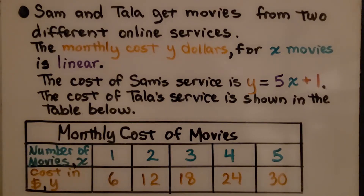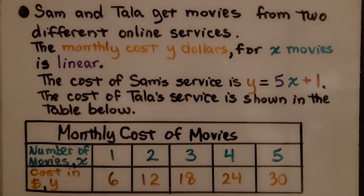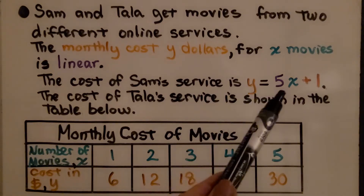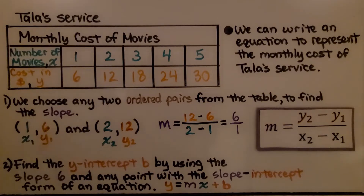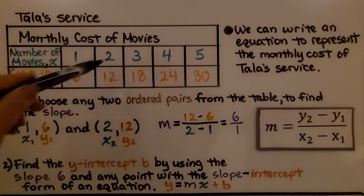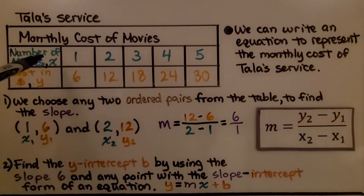Sam and Tala get movies from two different online services. The monthly cost y dollars for x movies is linear. The cost of Sam's service is y = 5x + 1. The cost of Tala's service is shown in a table below. So we have Sam's as an equation and Tala's as a table. Here we have Tala's service — this is her table of monthly cost of movies.